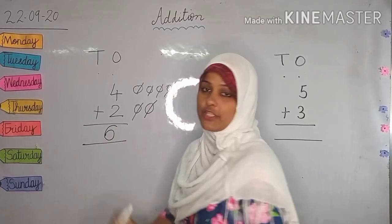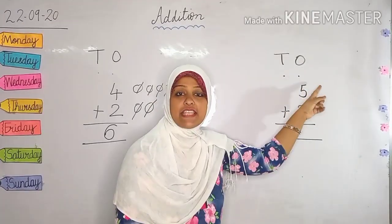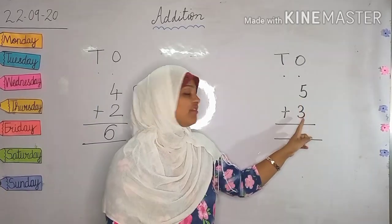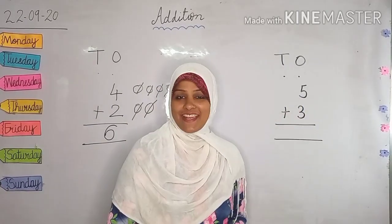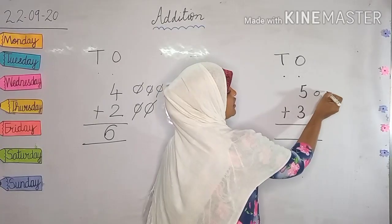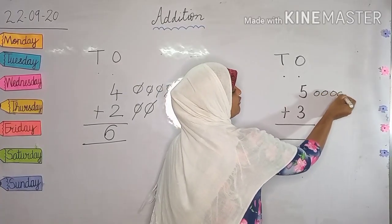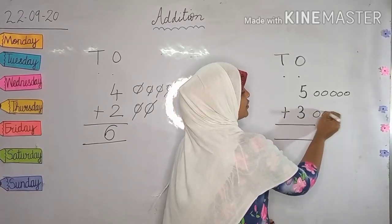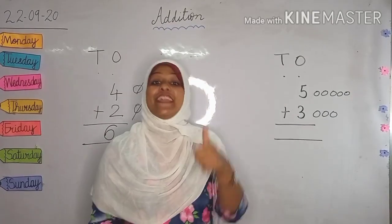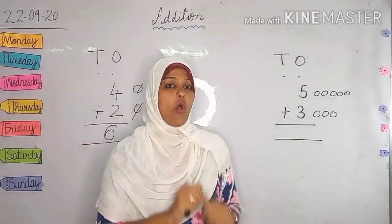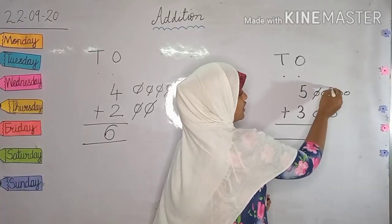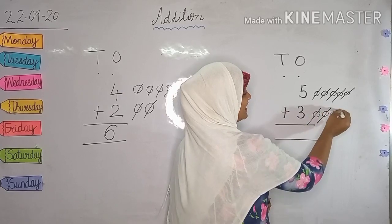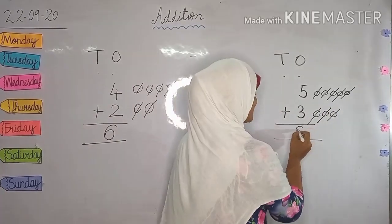And now we do one more sum. Here I have written 10s and 1s. Here we need to add to number 5, number 3. So come on, let's draw the balls. 1, 2, 3, 4 and 5. And we draw 3 more balls. 1, 2, 3. And now what we are going to do? Yes, we are going to count them all together. Come on, let's go. 1, 2, 3, 4, 5, 6, 7, 8. Good job. Our answer is 8.